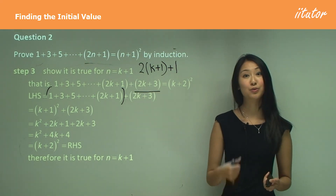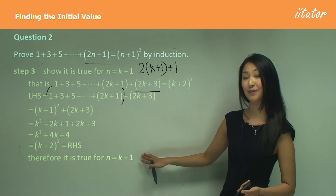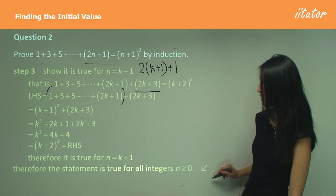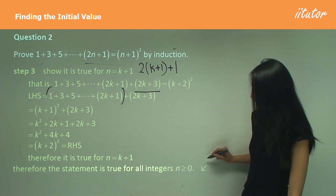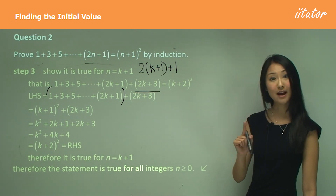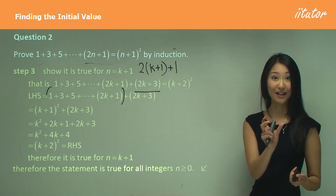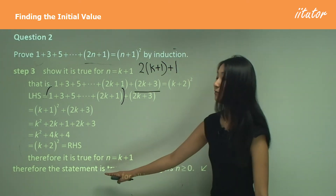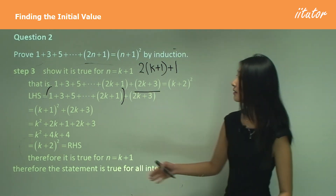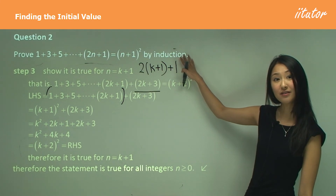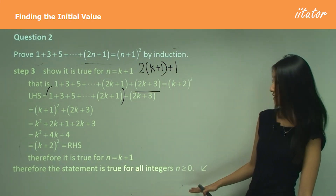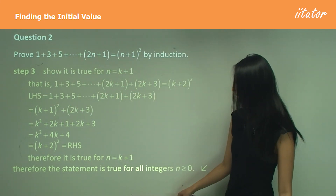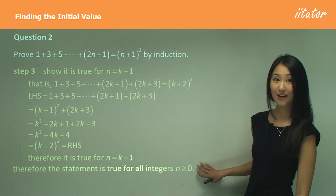Since we've proven it's true for n equals 0 and now proven it's true for n equals k plus 1, we make our concluding statement: therefore the statement is true for all integers n greater than or equal to 0. Notice I've written 0 here because in step 1 we found n equals 0 was the initial value — be careful to write that in your concluding statement. The best thing to write is the entire equation from the question, restating it, followed by 'is true for all integers n greater than or equal to 0.'